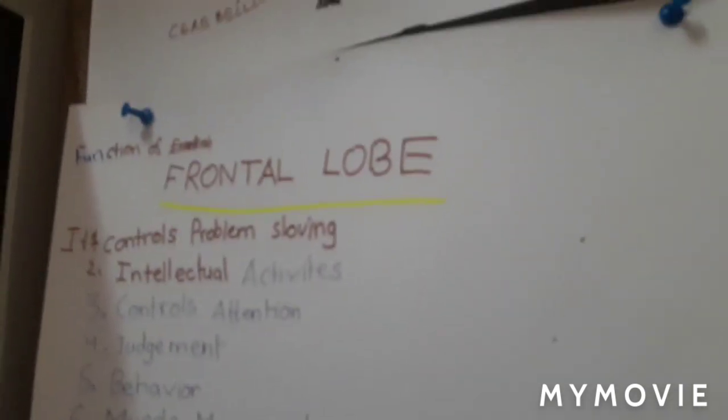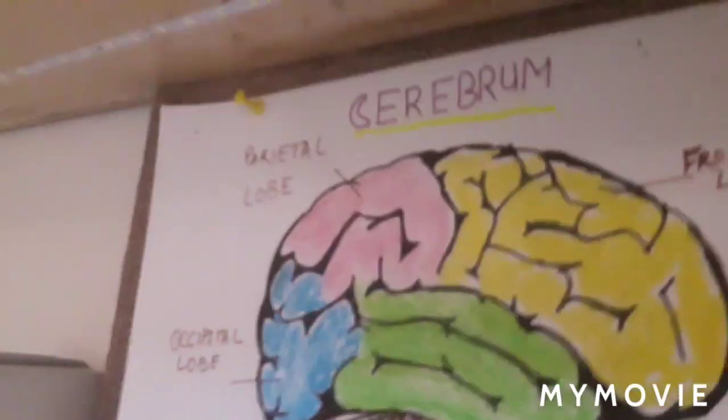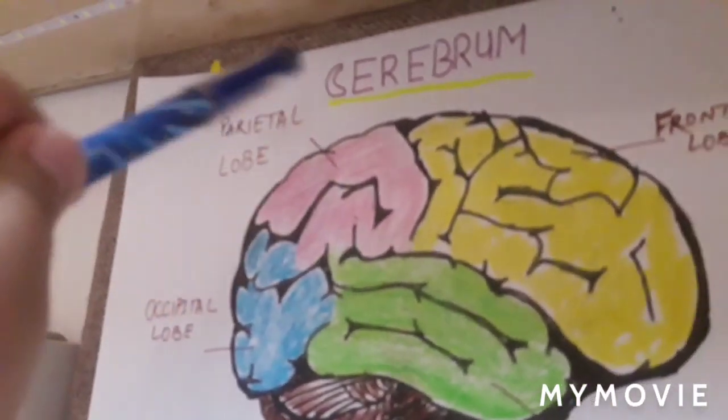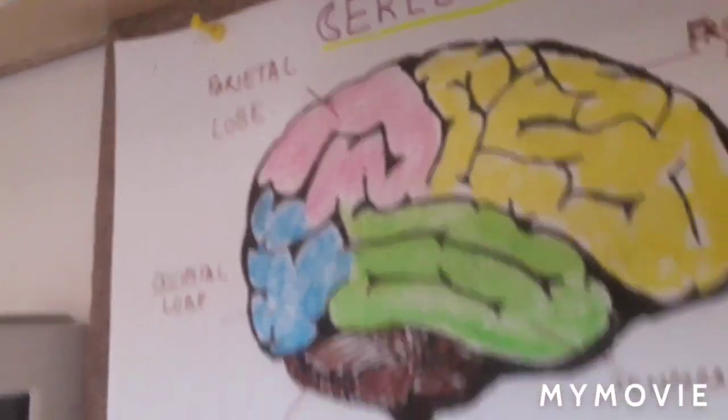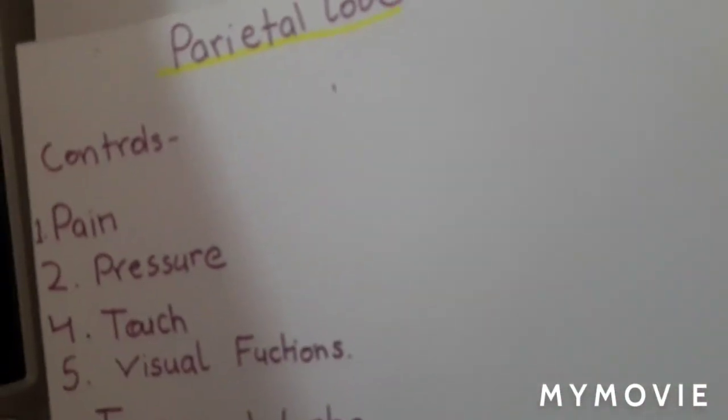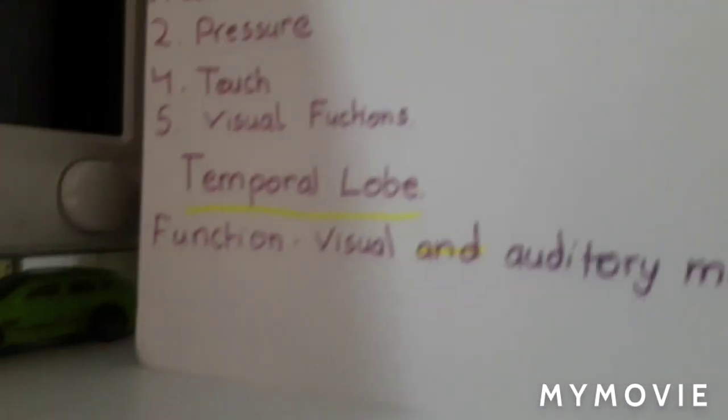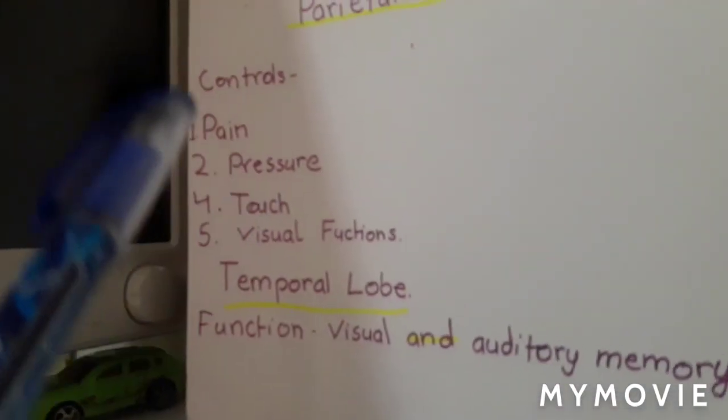Now let's look at the second lobe — the parietal lobe. You can see it here; it is a bit smaller than the frontal lobe. The parietal lobe controls pain, pressure, touch, and visual functions. For example, when you pinch yourself or poke yourself with a pin, the parietal lobe tells you about that pain.